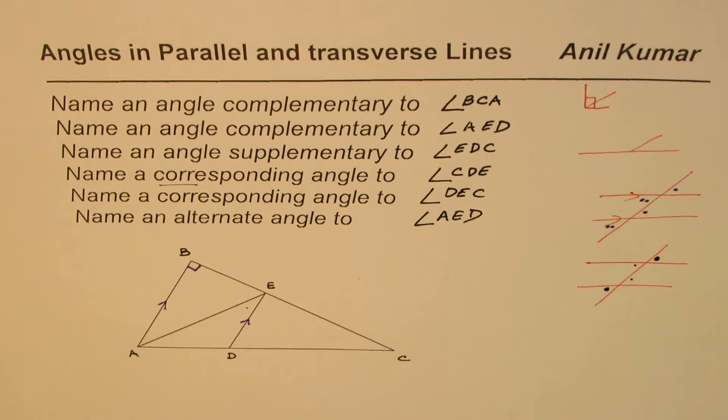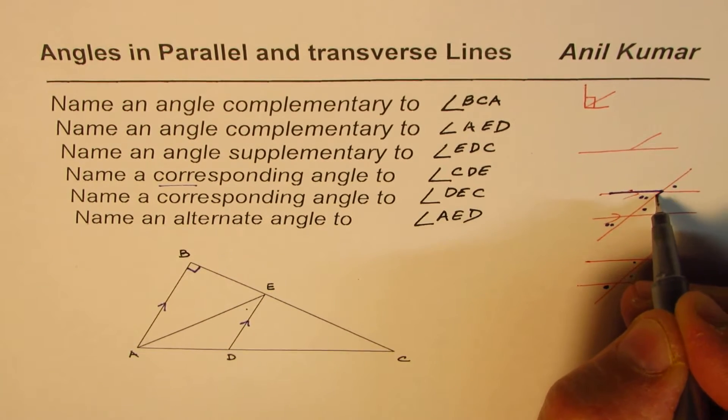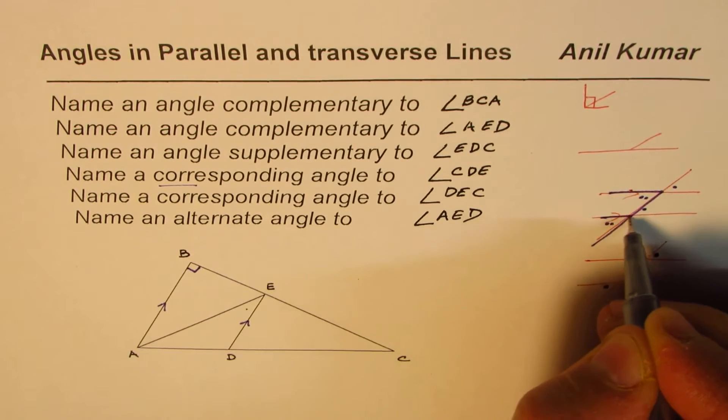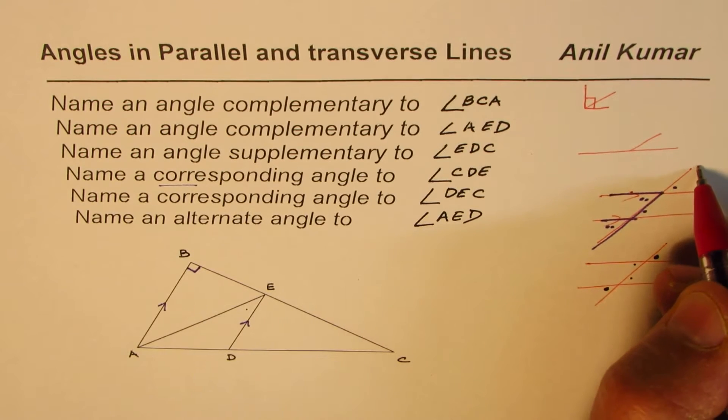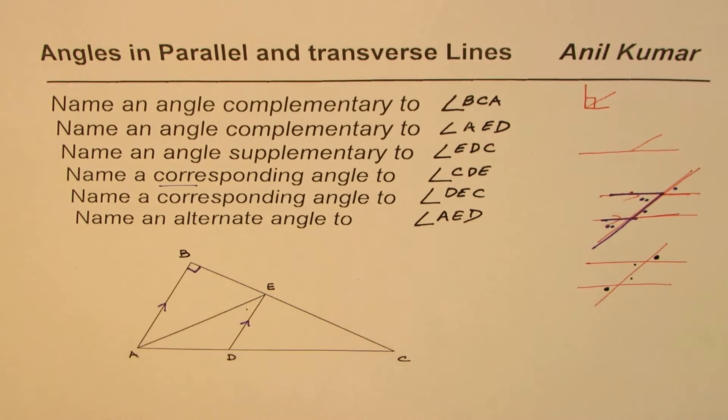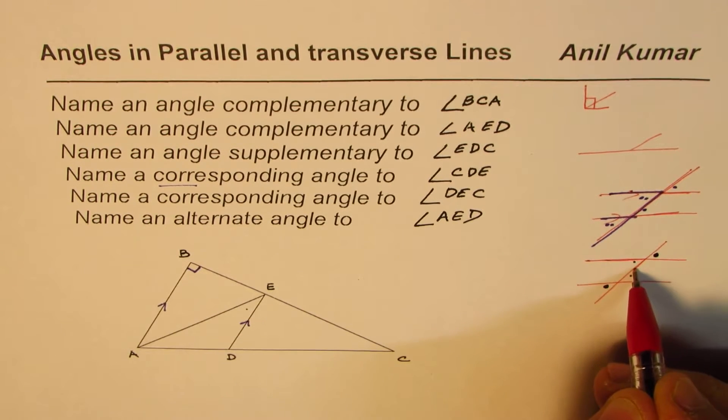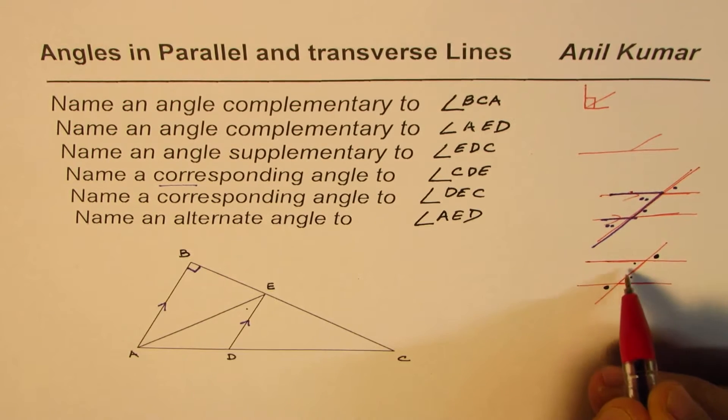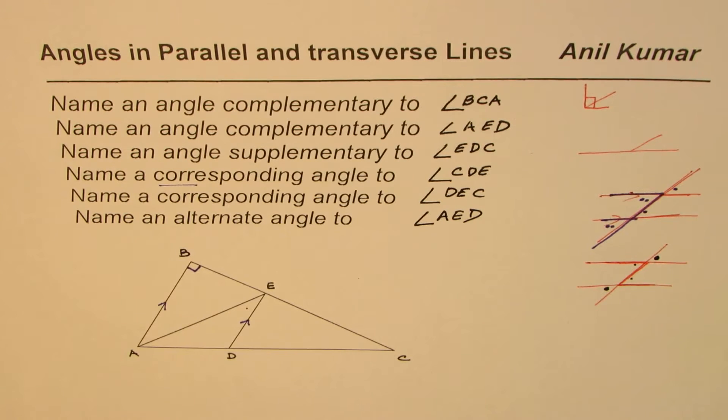Now as you must have seen, the corresponding angles form F pattern, that is the F pattern right. F pattern so it could be this way also, so you see F pattern here, so that is for corresponding angle. And as far as the alternate angle is concerned we are looking for a Z pattern. So Z pattern gives you alternate angles, that should help you to clearly identify the angles.